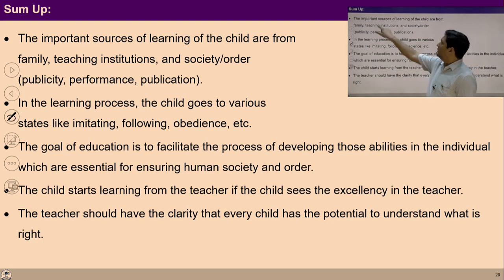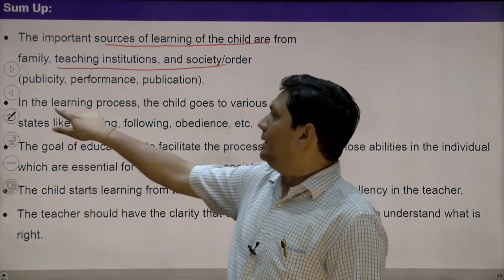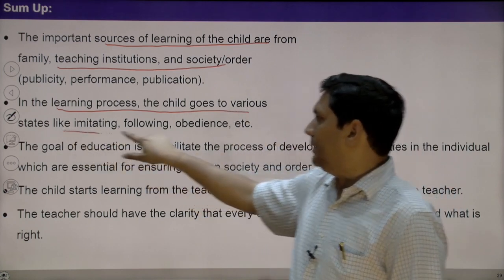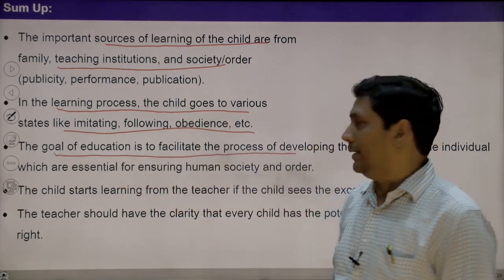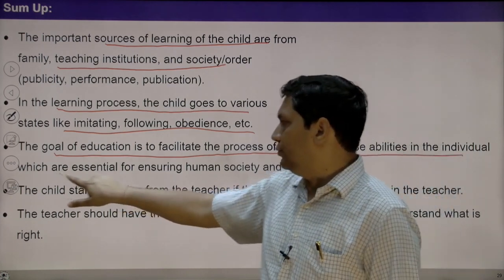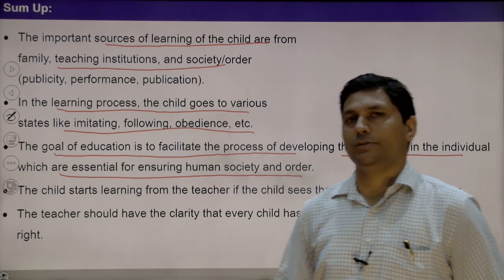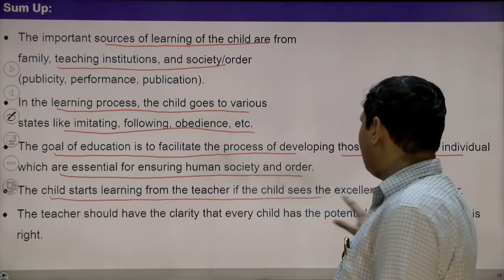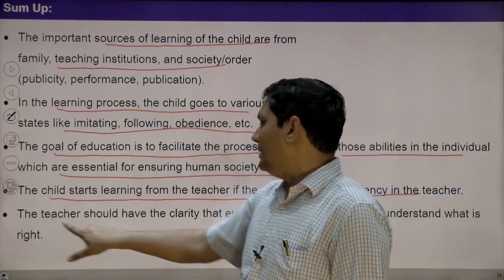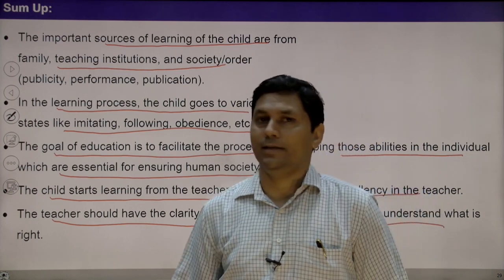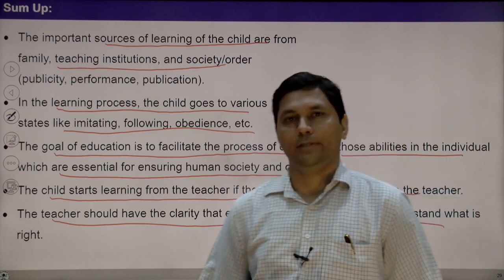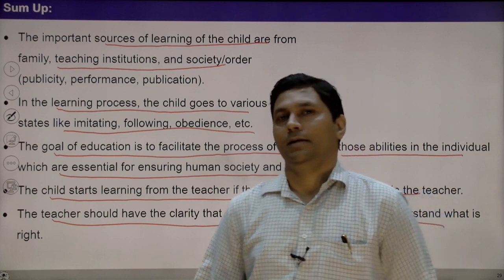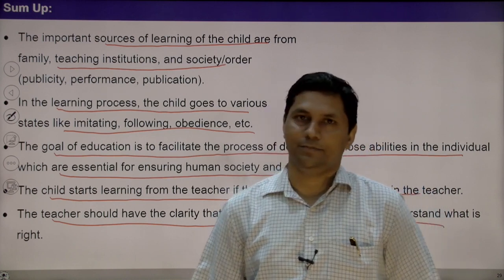Let's sum up the whole thing. Important sources of learning for the child are the family, teaching institute, society, and the environment. In the learning process, the child goes through various states like imitating, following, obedience, and so on. The goal of education is to facilitate the process of development — developing those abilities in the individual which are essential for ensuring human society and order. The child starts learning from the teacher if the child sees excellence in the teacher. The teacher should have the clarity that every child has an innate potential to understand. With this, we can help the child in the process of understanding. That's all — thank you very much, have a good day, let's meet in the next lecture.